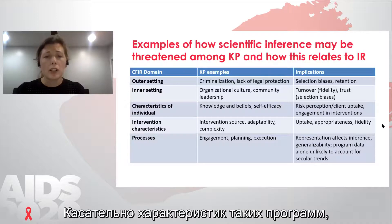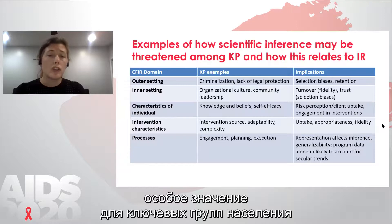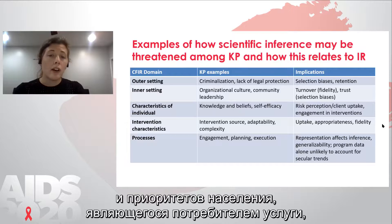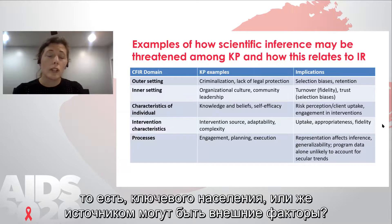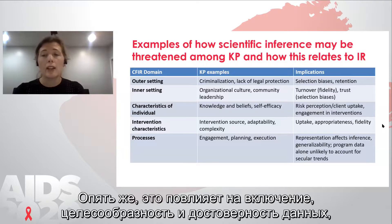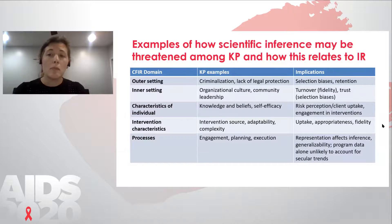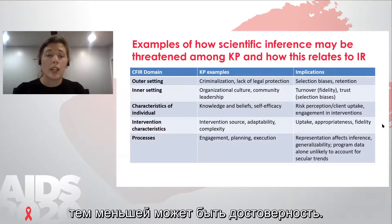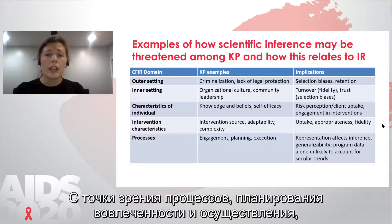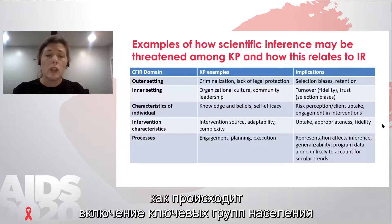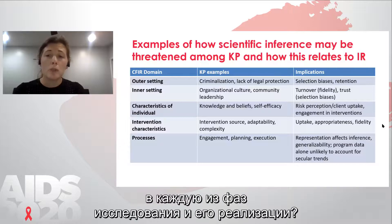In terms of intervention characteristics, particularly important for key populations might be the intervention source — did this intervention come from the needs and priorities of the key population being served, or did it come externally? How adaptable is the intervention and how complex? This will affect uptake, appropriateness, and fidelity, keeping in mind that greater complexity may lead to less fidelity. In terms of processes — engagement, planning, and execution — how are key populations incorporated into each of those phases of research or implementation?